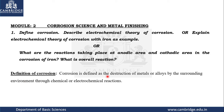So corrosion is defined as the destruction of metal and alloy by the surrounding environment through chemical or electrochemical reactions. One factor is the metal, the other is the medium. Either by a simple chemical reaction or through an electrochemical reaction, corrosion will take place. In an electrochemical reaction, both anode and cathode reactions go hand in hand for the progress of corrosion. Up to here is worth 1 mark.